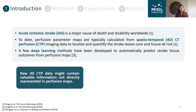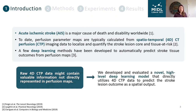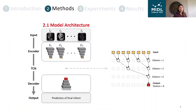Therefore, we aim to develop and evaluate a novel deep learning model that directly utilizes 4D-CTP scans to predict the stroke lesion outcome without needing to compute any perfusion maps. To accomplish this, we designed a deep neural network composed of three modules: an encoder, a temporal convolutional network (TCN), and a decoder.